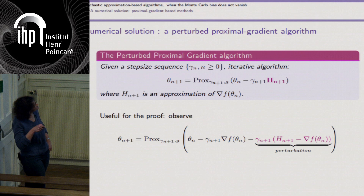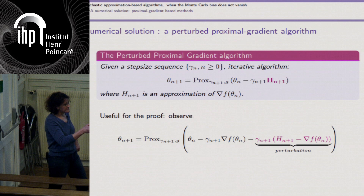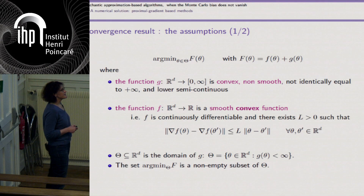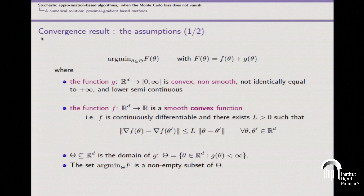To derive convergence results, we need sufficient conditions on the step size and sufficient conditions on the perturbation such that this algorithm inherits the same behavior as the proximal gradient. The assumptions are: both terms are convex; G is non-smooth, lower semi-continuous, and its proximal operator exists; F is convex with a globally Lipschitz gradient; the domain is a subset of R^d; and the set of minimizers of F is non-empty.